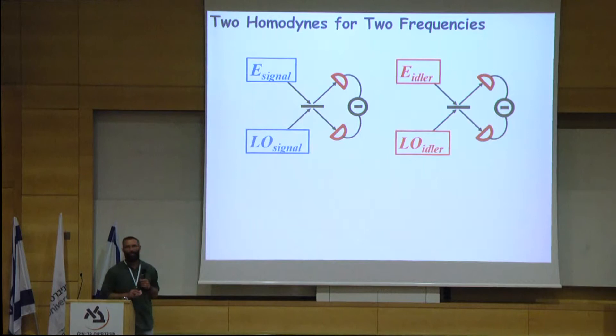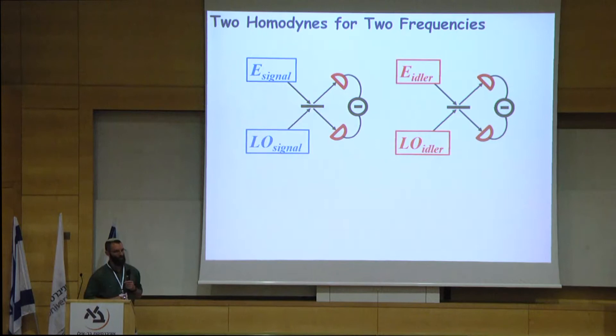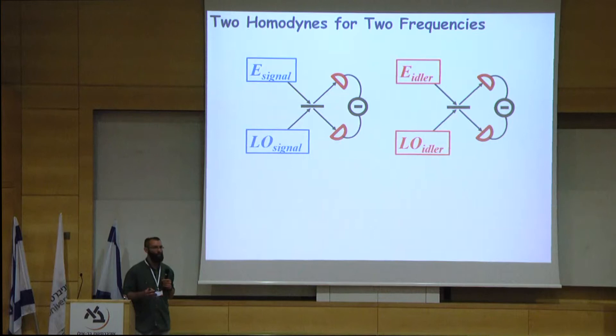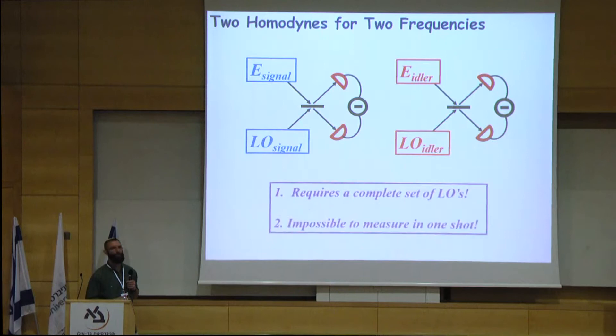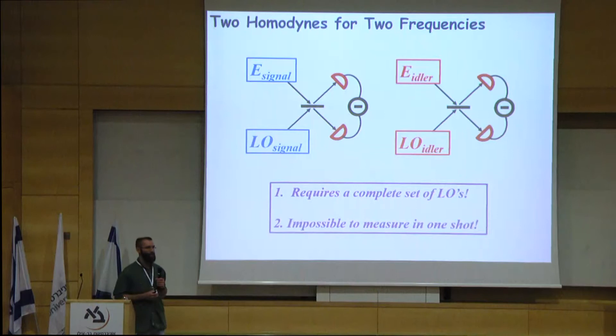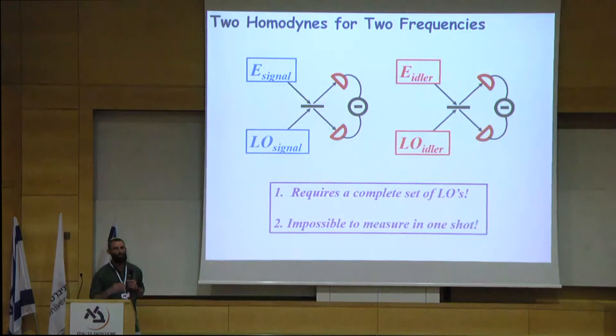There is a standard solution to measuring the two-mode quadratures: using two separate homodyne setups, one measuring the signal and another measuring the idler mode. However, each setup needs its own matching local oscillator — one for the signal, one for the idler. The problem is that if you want to measure a broadband signal, you would need a dense set of local oscillators matching each individual frequency mode of the spectrum. Another problem is that for two-mode quadratures, it would be impossible to obtain the complete two-mode quadrature information.